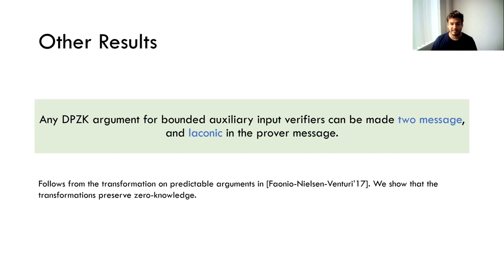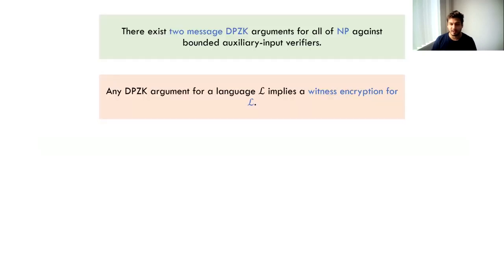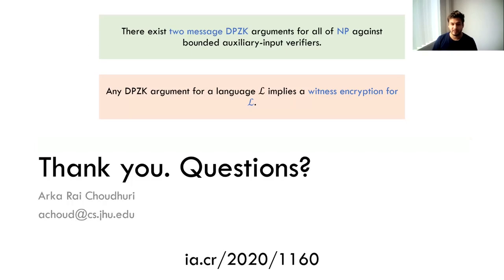That brings us to the end of the talk. To sum up: assuming strong primitives, we construct two-message DPZK for all of NP against bounded auxiliary input verifiers. We show that some of these strong assumptions are inherent by showing that DPZK for any language implies a witness encryption for the same language. Thanks a lot. If you have any questions, feel free to reach out by email. The paper is also on ePrint — here's the link — and you can ask questions during the live talk.